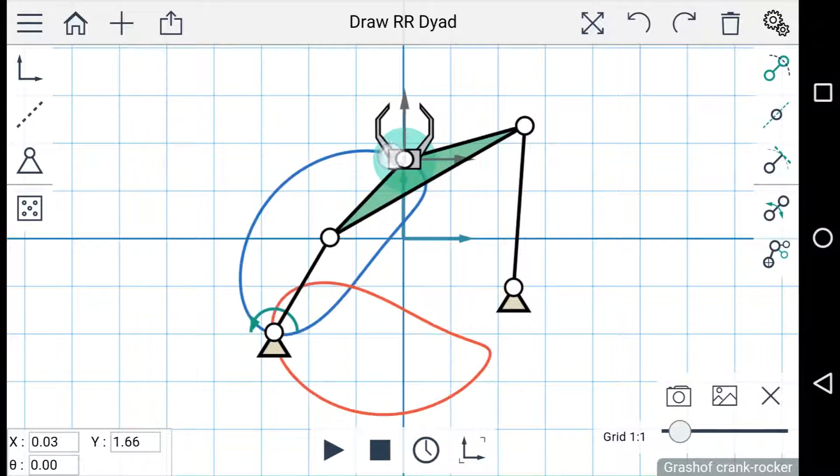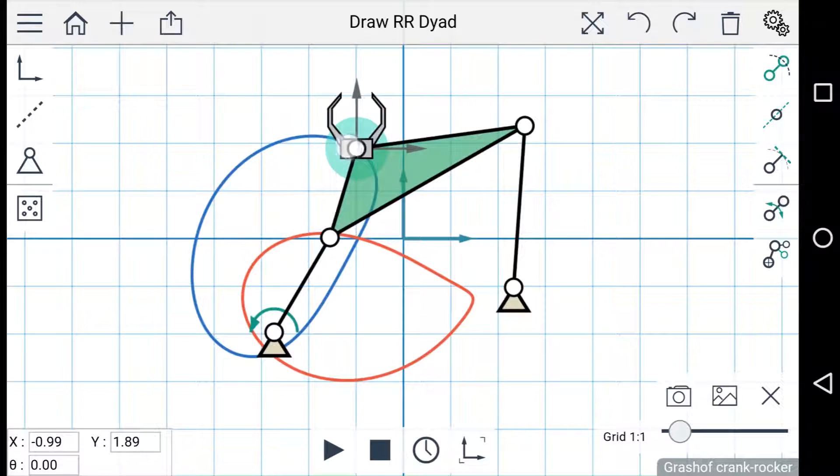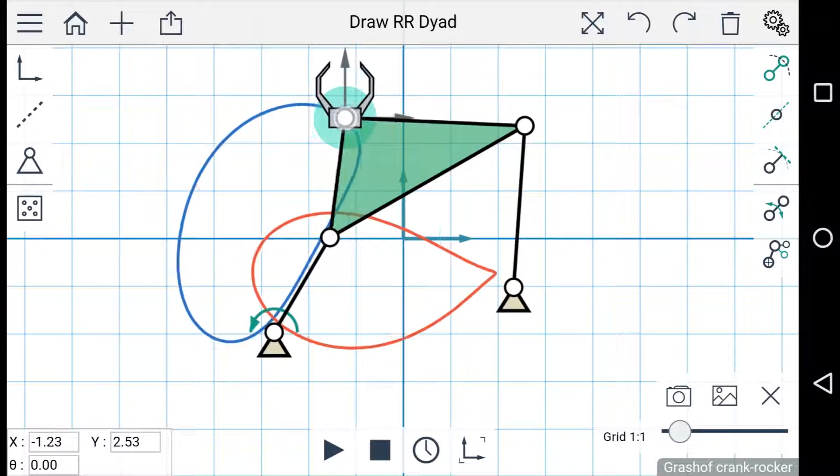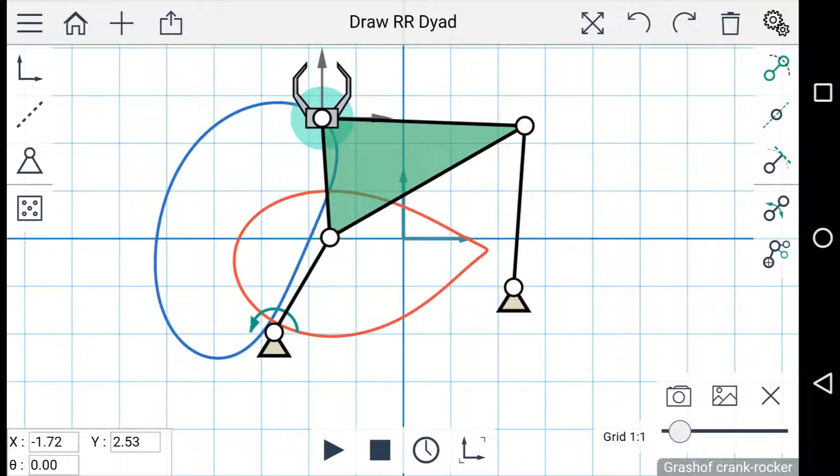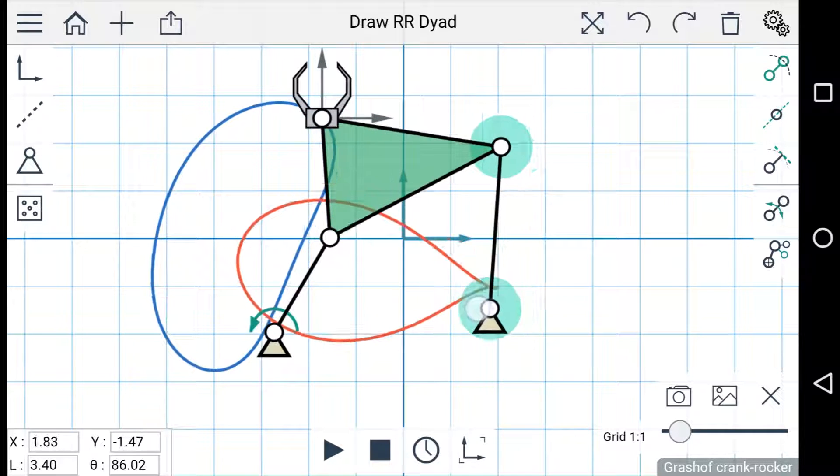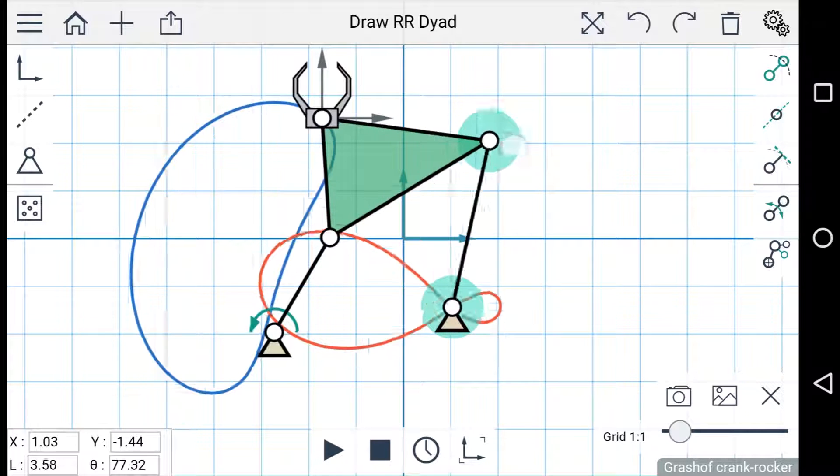You can tap and drag the end effector to place it where you'd like, and you can see the coupler curves change as the end effector moves. If you don't like the way your linkage came out, you can tap one of the dyads and move the ground link, or change the length and angle of the dyad.